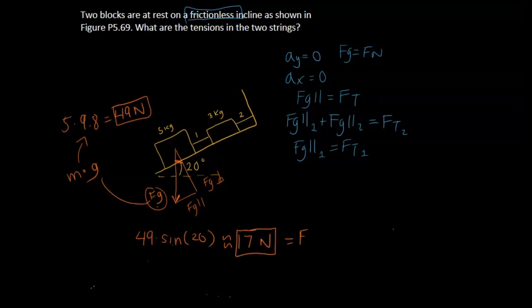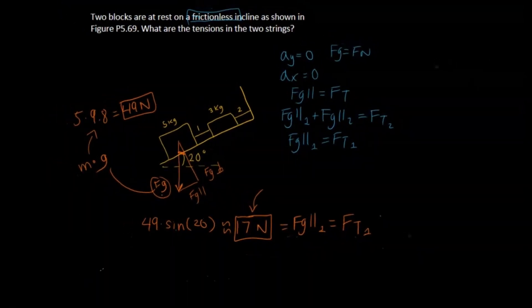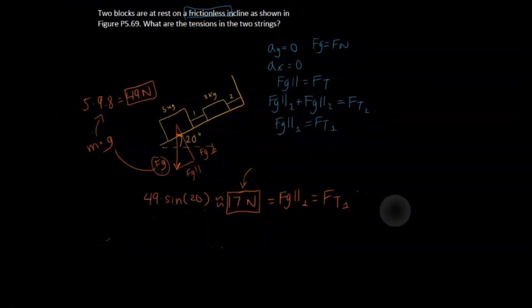So this is equivalent to force of gravity 1, the parallel component, which as we said before is also equivalent to the force of tension of 1. So the question asked what are the tensions in the two strings. So we found the tension in the first string and that is 17 newtons. But we still have to find the tension in the second string.